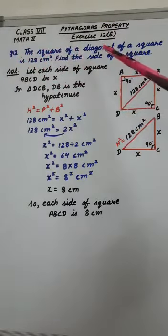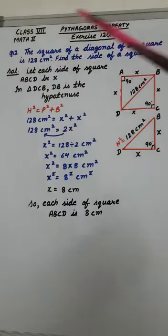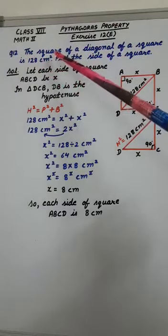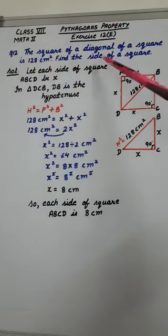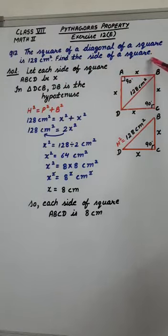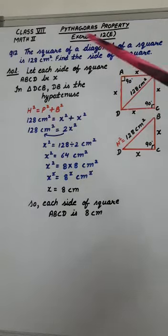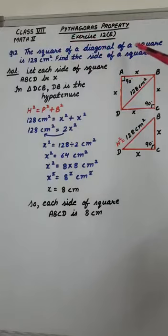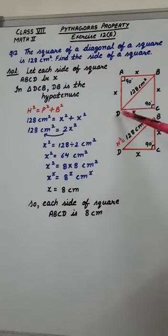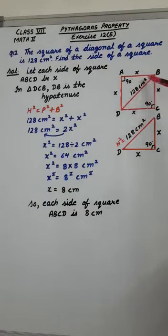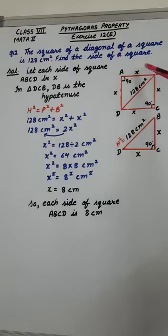The square of a diagonal of a square is 128 cm square. Find the side of a square. Now here I have drawn a square ABCD and it is given in the question that the square of diagonal of a square, this diagonal, its square is given 128 cm square. So here we have to calculate the side of this square.